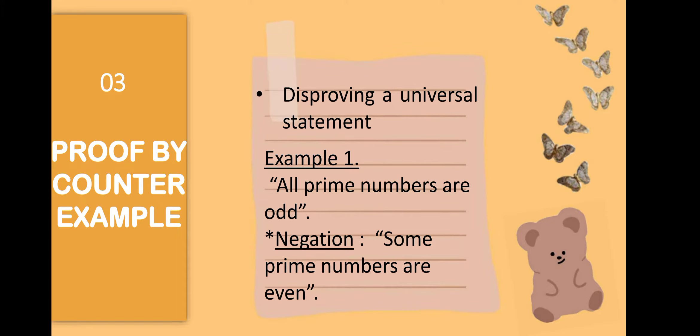Next, we have proof by counterexample. Proof by counterexample is disproving a universal statement. In order to prove that a statement is true, you need to give a lot of examples. But in order to disprove a certain statement, you only need one counterexample.